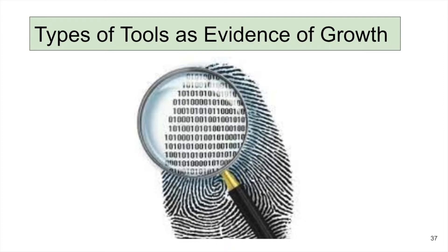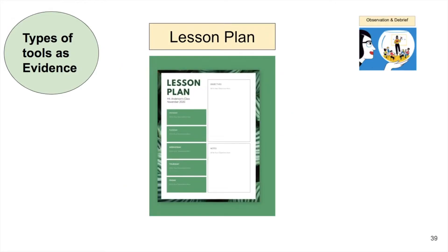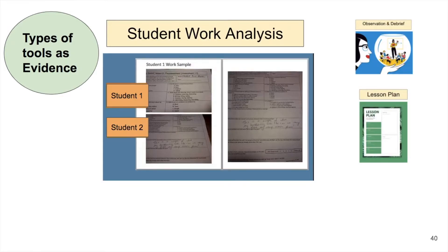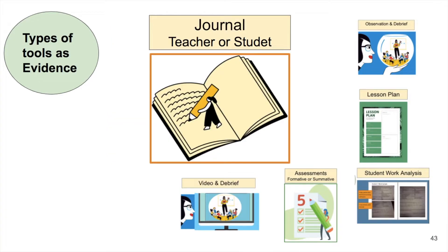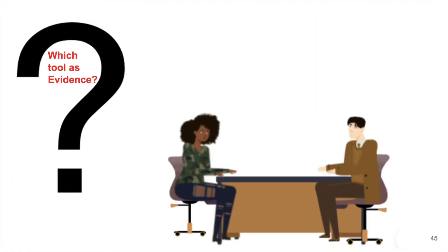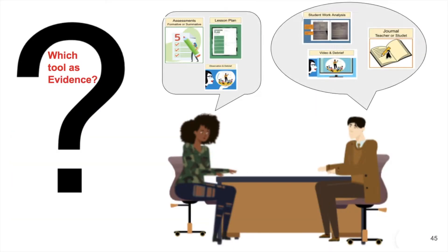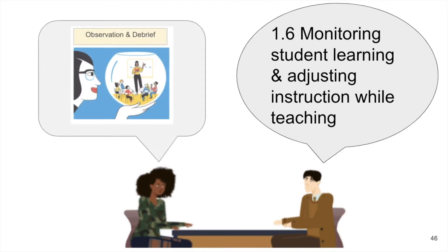As the work is being done, you will collect evidence. Evidence collected can be in the form of the following tools: observation notes and debrief, lesson or unit plans, student work analysis, assessments, video clips, and debrief journal, just to name a few. Begin to think about which type of evidence or tool makes the most sense for the goal. For example, if the goal is 1.6 — monitoring student learning and adjusting instruction while teaching — the observation tools could be a good source of evidence.